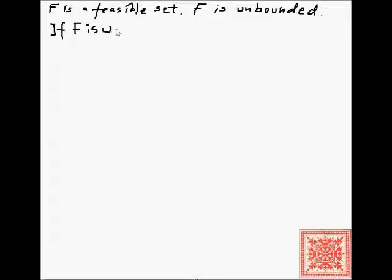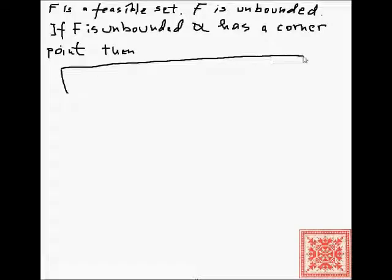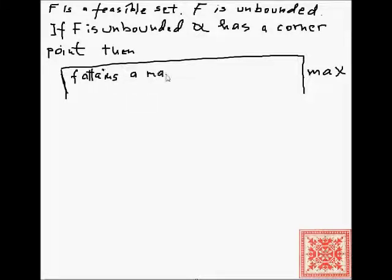If F is unbounded and it has a corner point — for the definition of corner point you can take a look at the previous four screencasts — we have two types of problems in linear programming. There's a maximization problem where the objective function must be maximized. The objective function is typically called f. If we have a maximization problem, then f attains a maximum value at a corner point.